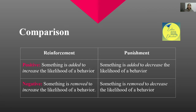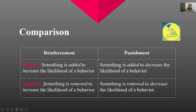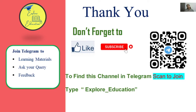So to compare: in reinforcement — positive or negative — we always increase the likelihood of the behavior. In punishment — positive or negative — we always decrease the likelihood. The method changes but the goal stays the same. Reinforcement and punishment are the two key concepts, the consequences or after-effects, in Operant Conditioning. And remember: negative reinforcement is not equivalent to punishment.